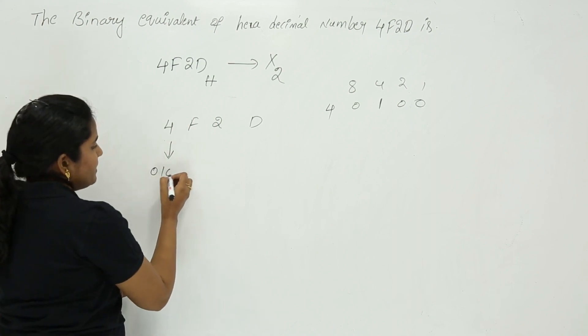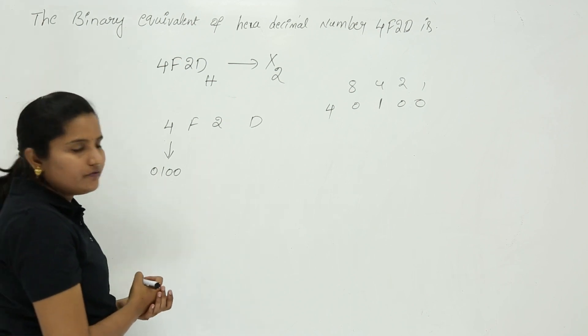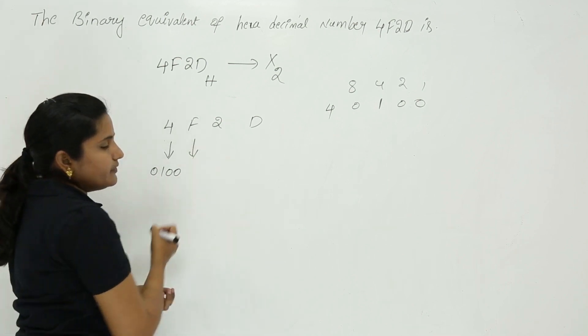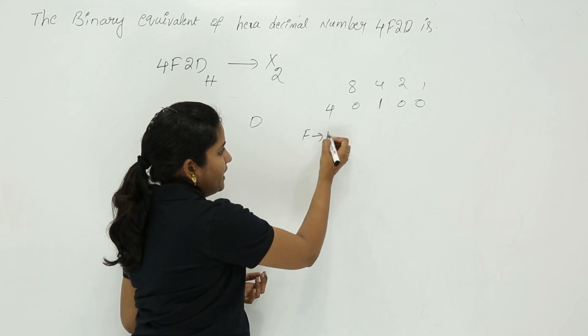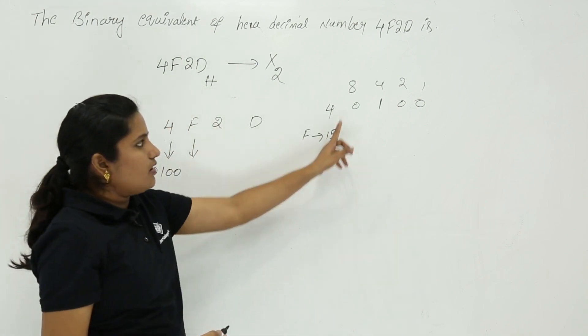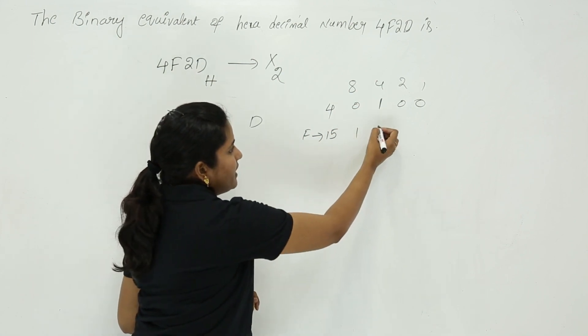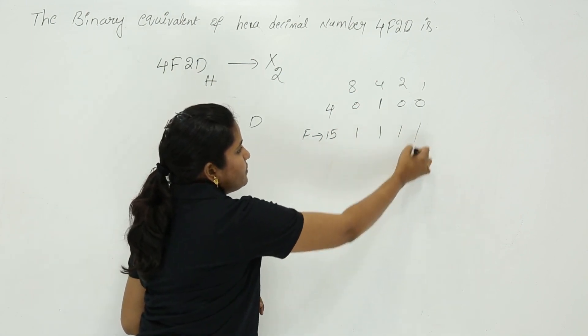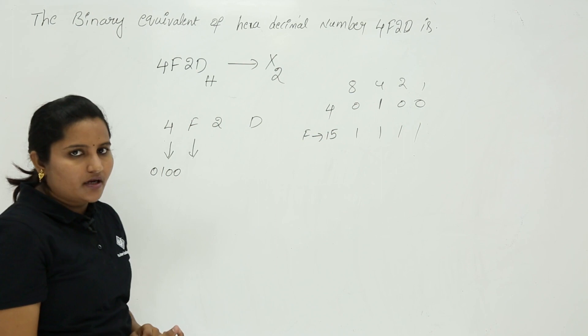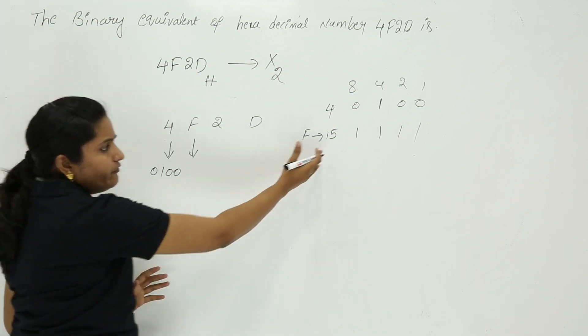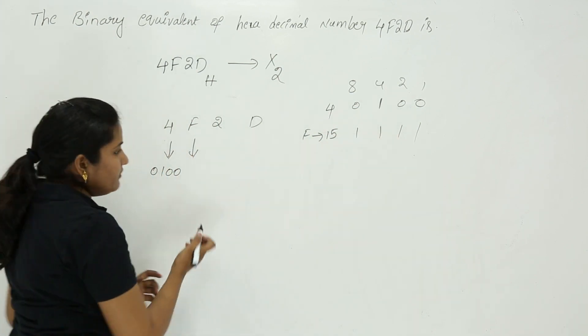Next, for F: F means 15. To make 15, all values are needed. You require 8 + 4 + 2 + 1 to make 15 or F. So the binary for F is 1111. You can directly write 1111.